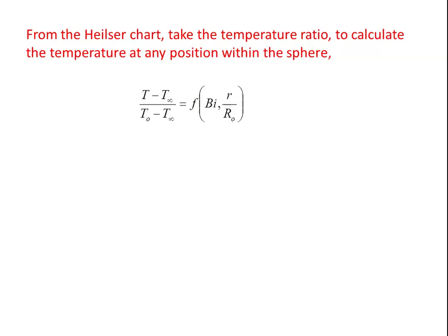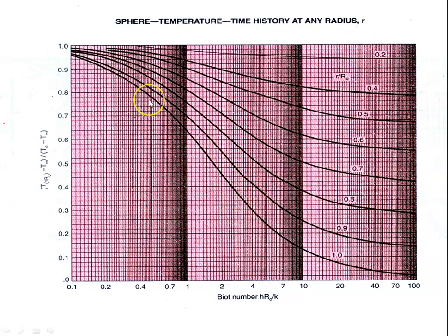To calculate the temperature at any position, any radius within the sphere, we again use the Heisler chart. The temperature ratio is (T − T_∞) / (T_o − T_∞), which is a function of Biot number and dimensionless position r/r_o. Here T is the temperature at the given radius and T_o is the center temperature from the previous calculation. The x-axis is Biot number h·r_o/k, the y-axis is the temperature ratio, and the lines are for constant values of r/r_o ranging from 0.2 up to 1.0 for the outer surface.